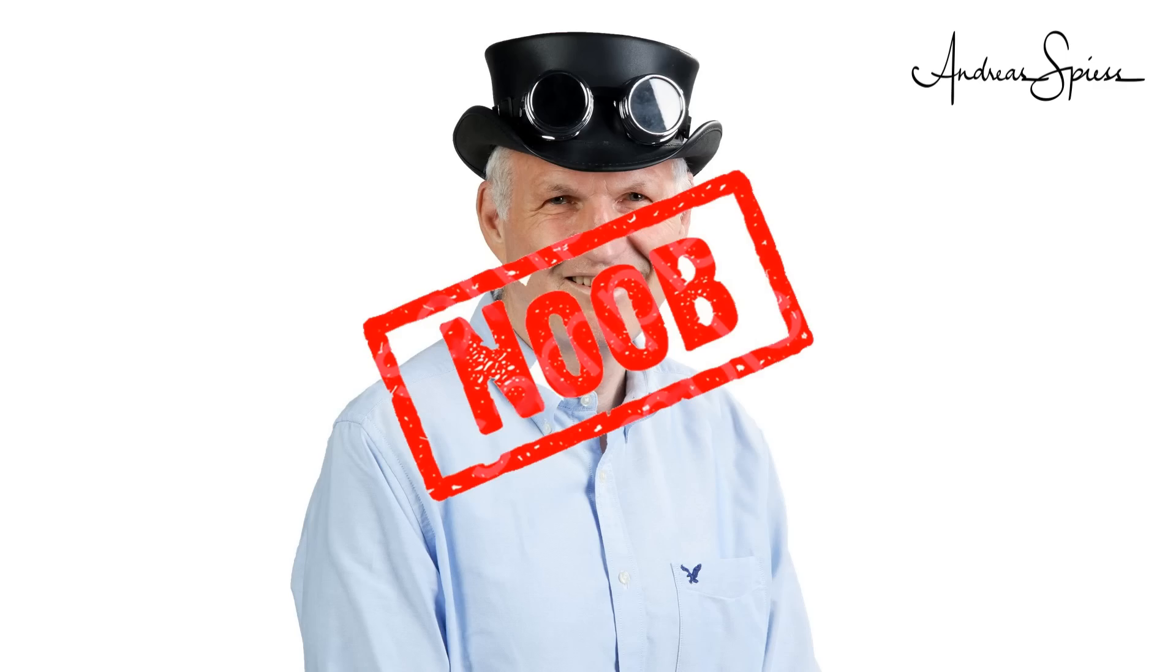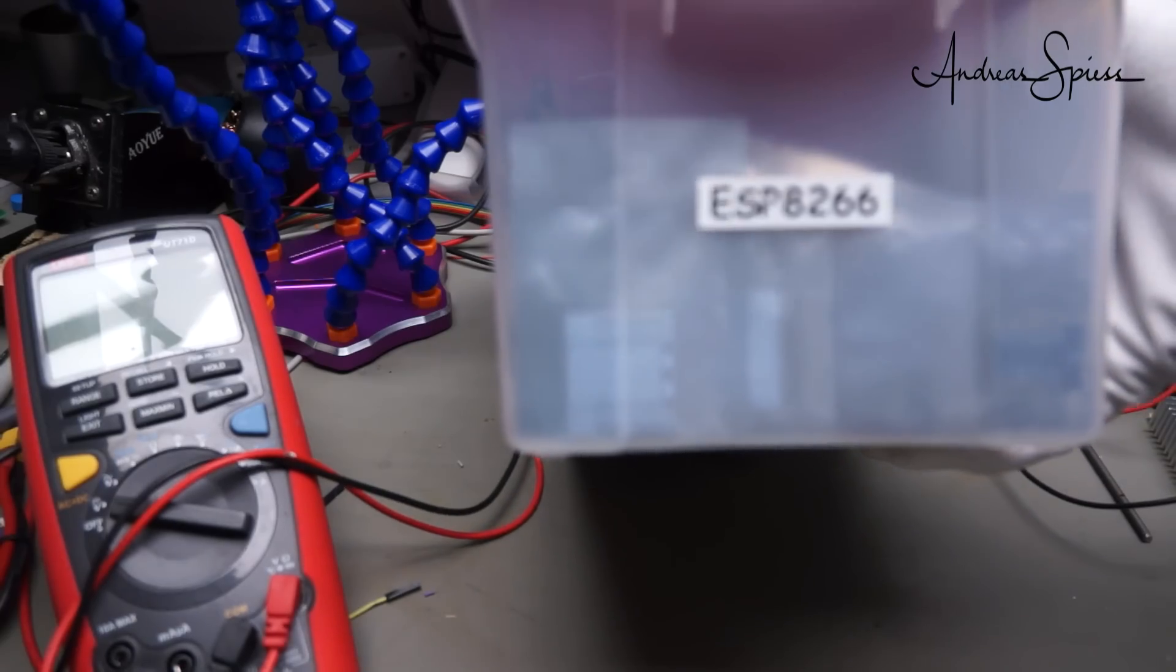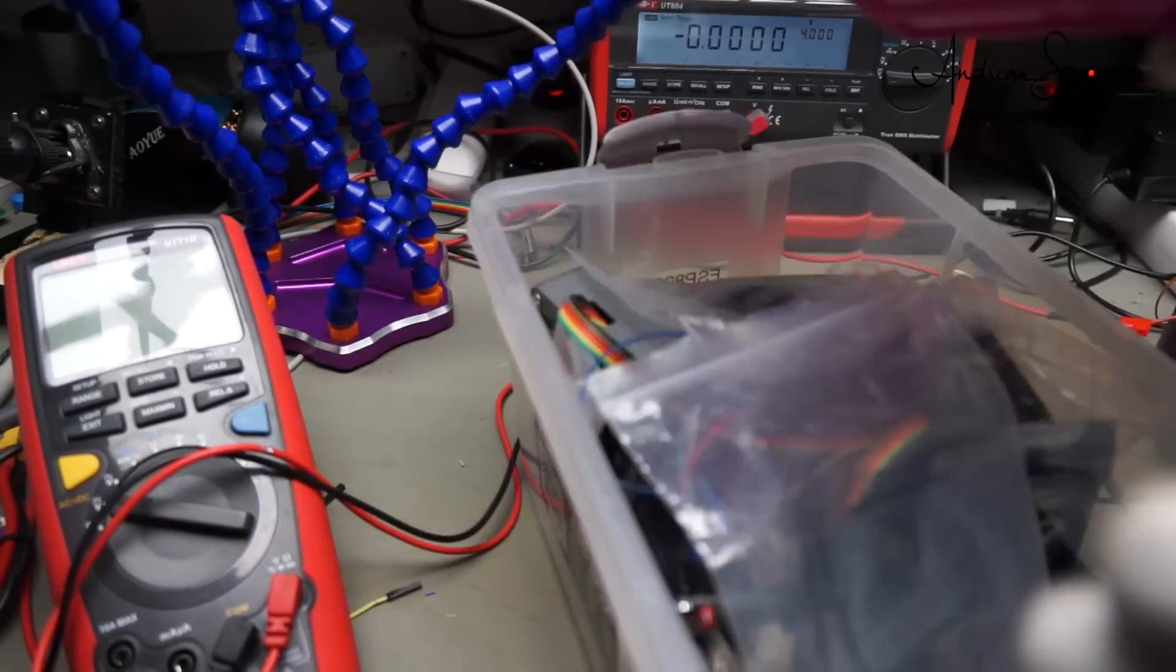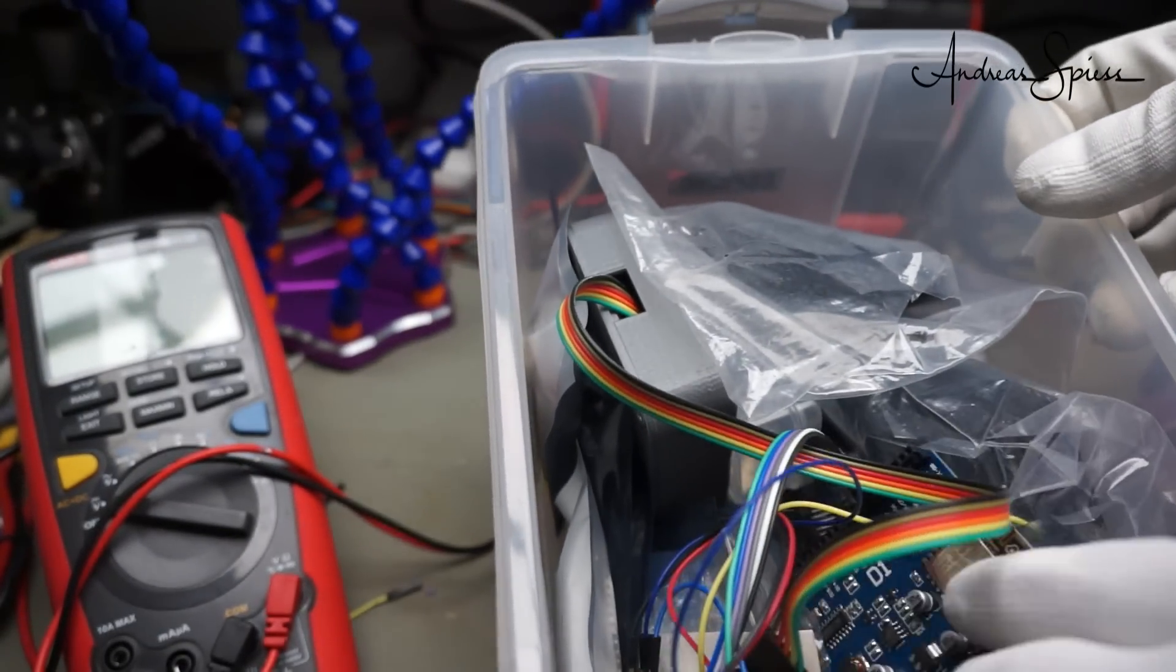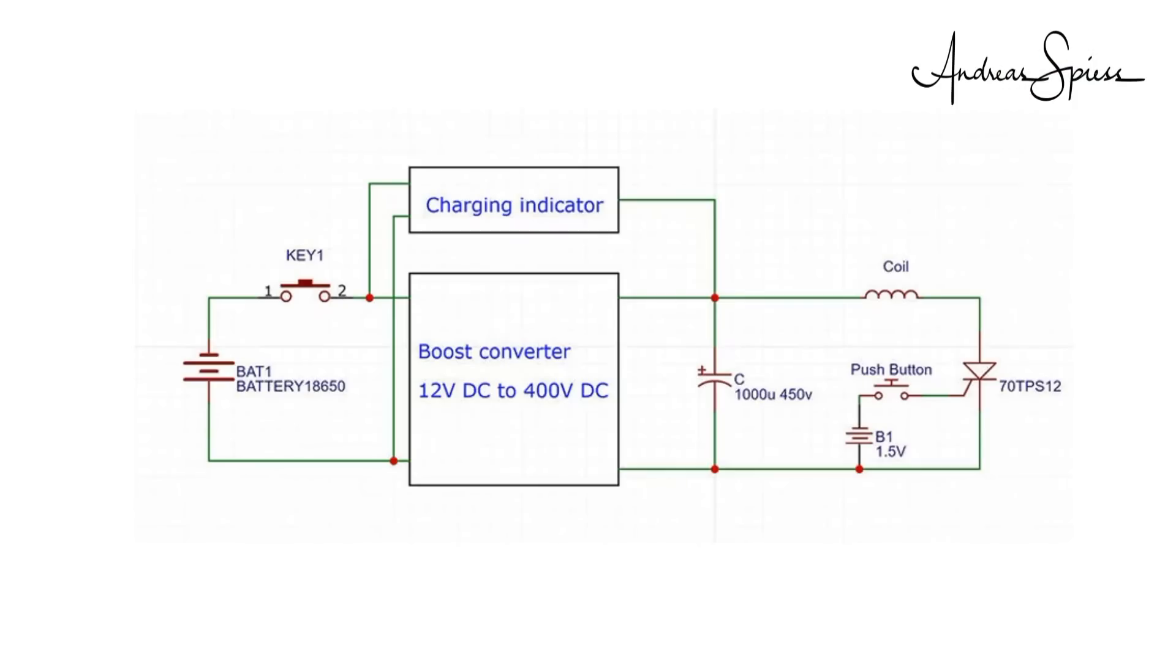400V are dangerous for electronics parts, especially with a noob at the controls. So I went into my ESP8266 box and searched for the board with the least value for me. Not an easy task, because I love all of them.